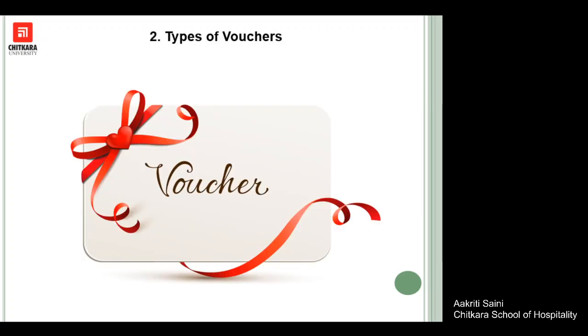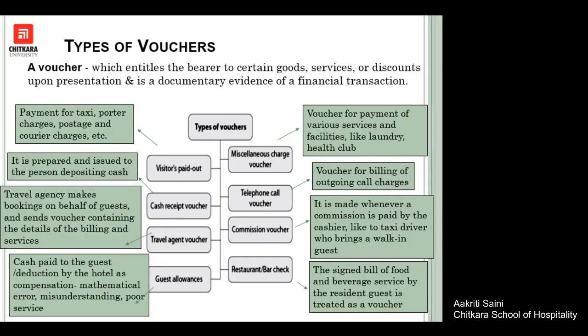We will now discuss the types of vouchers. There are eight types of vouchers: visitors paid out, cash receipt voucher, travel agent voucher, guest allowance, miscellaneous charge voucher, telephone call voucher, commission voucher, and restaurant or bar check.